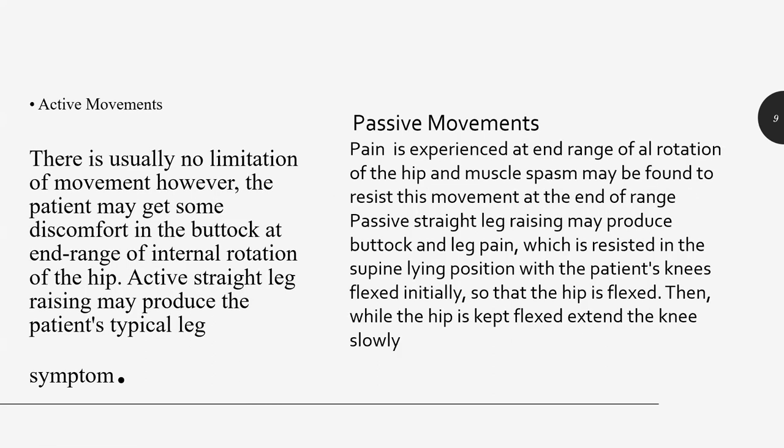For active movements: there is usually no limitation of movement. However, the patient may get some discomfort in the buttock at the end range of internal rotation of the hip. Active straight leg raising may also produce the patient's typical leg symptoms — this is why people are confused between sciatic nerve involvement and piriformis muscle tightness.